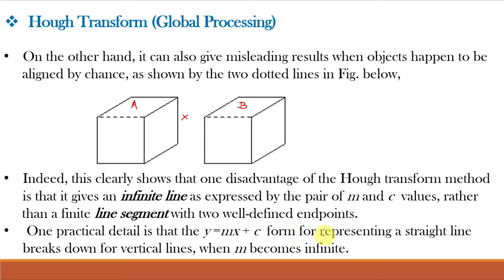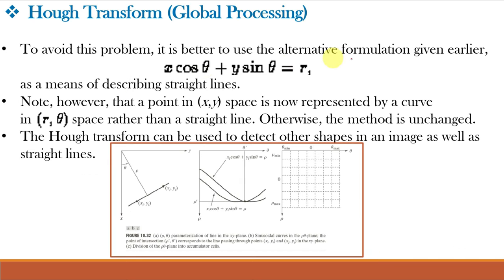A practical problem is that the Y = MX + C form breaks down for vertical lines when M becomes infinite. The solution is to use polar coordinates: X·cos(θ) + Y·sin(θ) = ρ (rho). To avoid the infinite slope problem, it is better to use the formulation X·cos(θ) + Y·sin(θ) = R to describe straight lines. In this case, a point in XY space is represented by a curve in the rho-theta (R-θ) space rather than a straight line. The Hough transform can also detect other shapes such as circles, parabolas, etc.